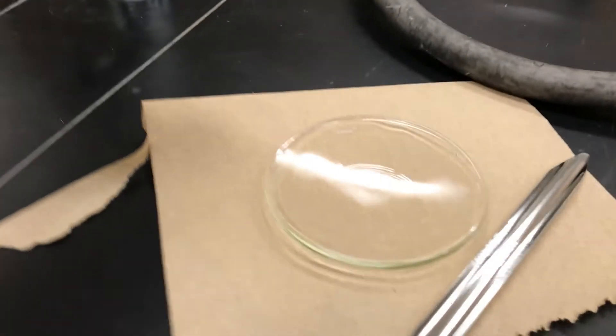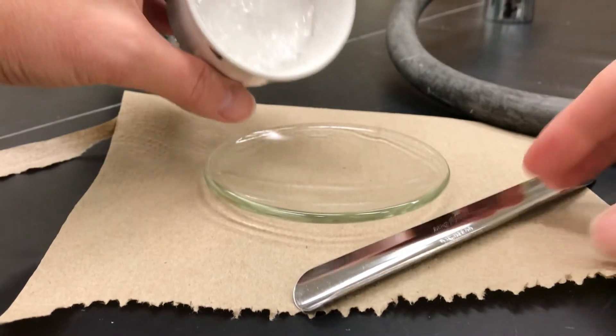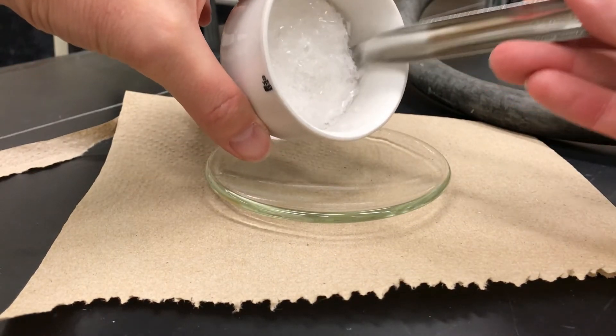So to collect it, scrape the solid onto a pre-weighed watch glass. Use a spatula and you may as well scrape off the entire thing, including the filter paper.